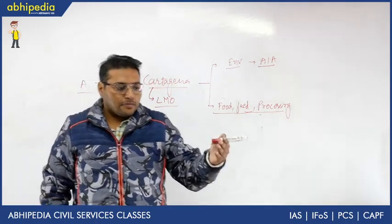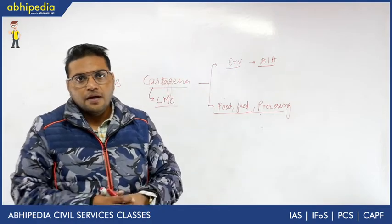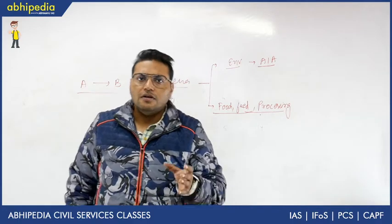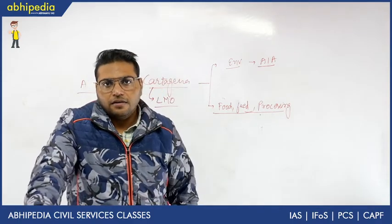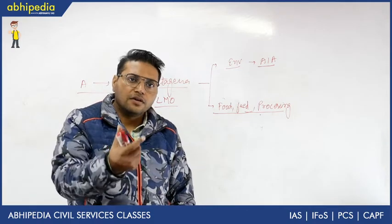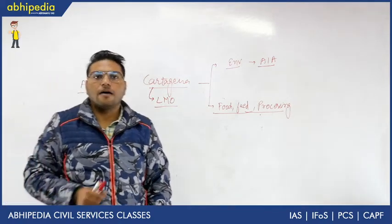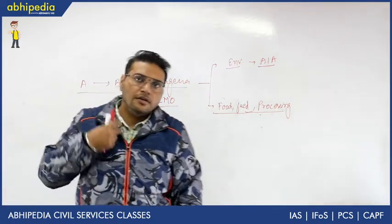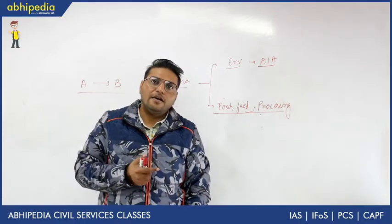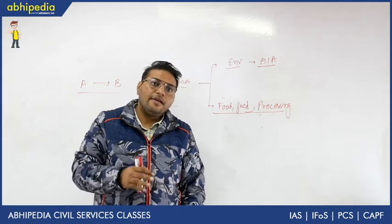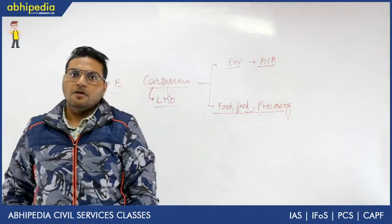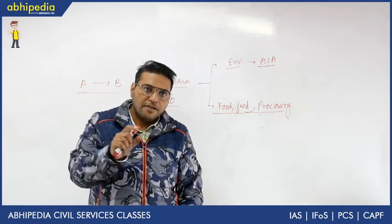For example, let us suppose Australia exports to India a living modified organism. Australia has to notify within the first 90 days that India, that this particular organism is living modified. You can see what changes are happening. The second thing, India will test what environmental impact is happening. Then India, within 90 days, will reply that yes or not.